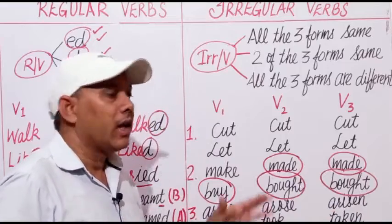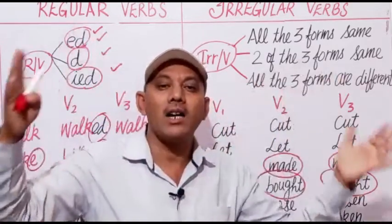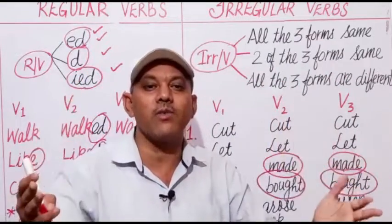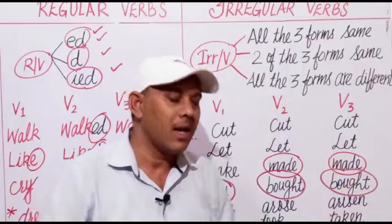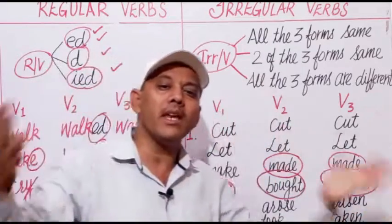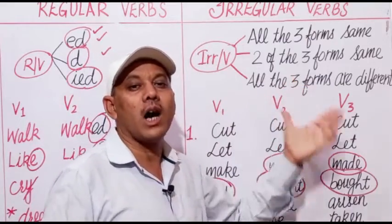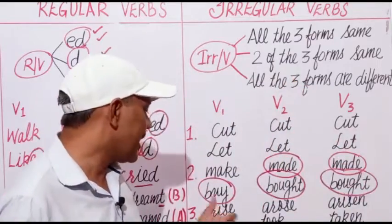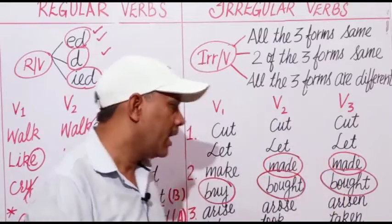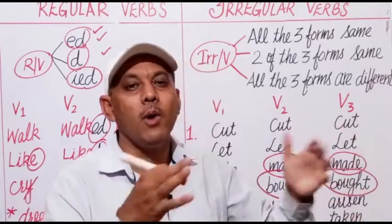The third type is where all three forms of a verb are different — they have different structure, different words, and different spellings. These are also known as irregular verbs. There are so many irregular verbs whose all three forms are different. For example: arise, arose, arisen; take, took, taken, and many more.